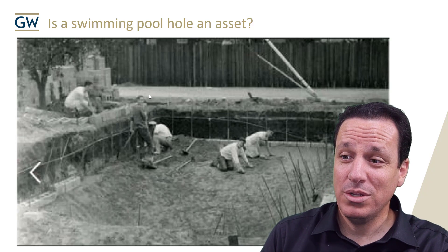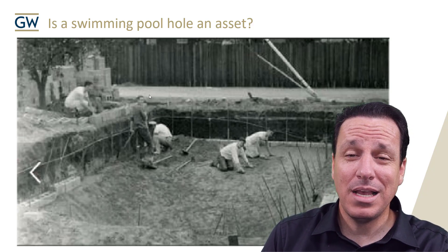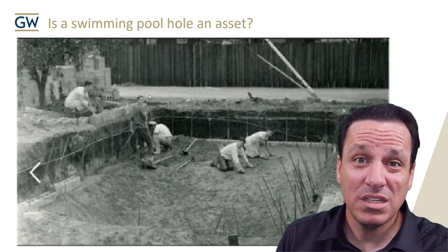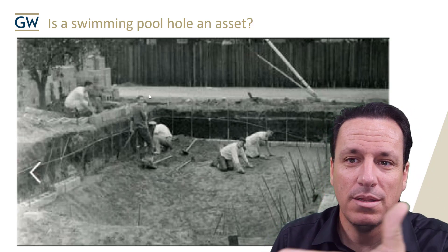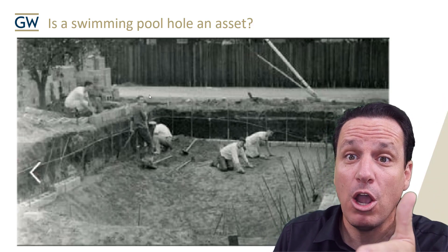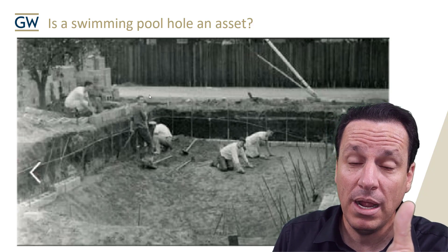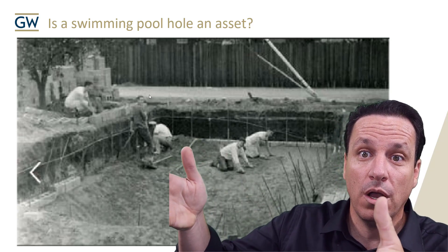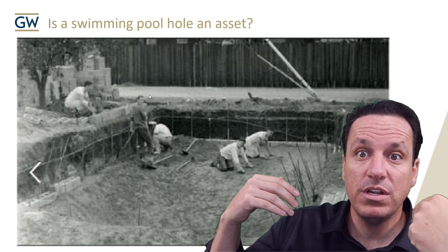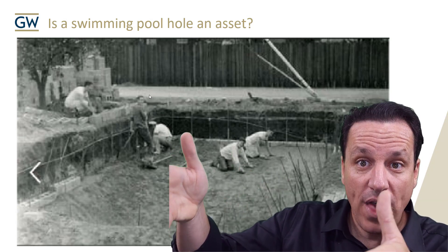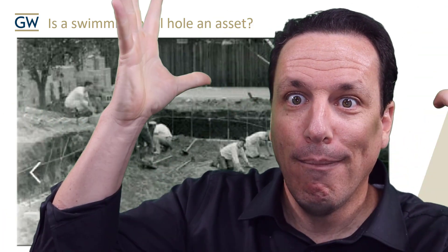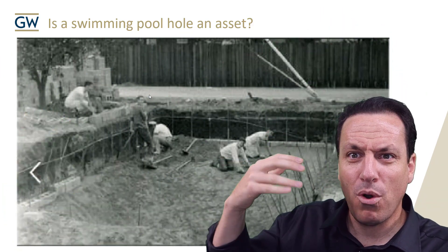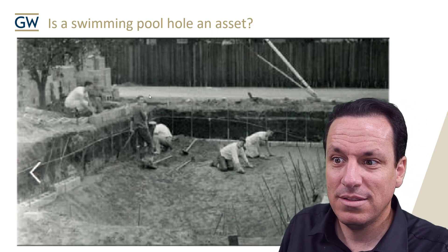Let's say you dig a hole for a customer and that customer decides to stiff you and not pay for the hole. What can you do? This is America — you sue them. If somebody owes you something, we take them to court. If they signed a contract and you've done the work, you have a claim to their resources because they committed to paying you. So that hole in the ground is an asset — there's a probable future economic benefit. Similarly, if you install rebar — the steel used to keep the pool structure in place — that rebar is also an asset. If someone tries to stiff you, you can take them to court and get paid because they've committed to a contract.